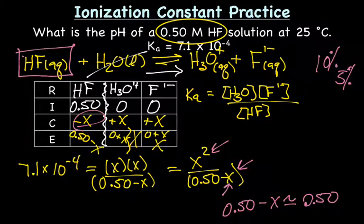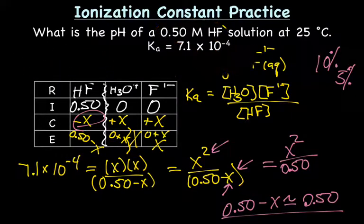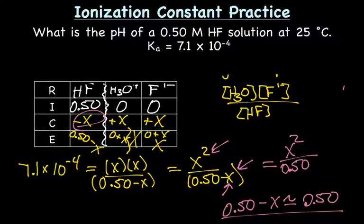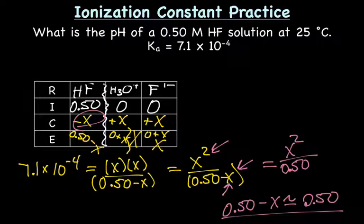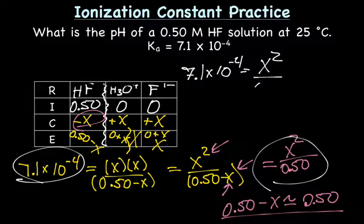Okay, so our equation is now going to be substituting in our approximation here. So I'm going to erase some of this stuff to give us a little bit more room to work. And I'll rewrite our Ka expression. So we're going to have 7.1 times 10 to the negative 4 equals X squared over 0.50.